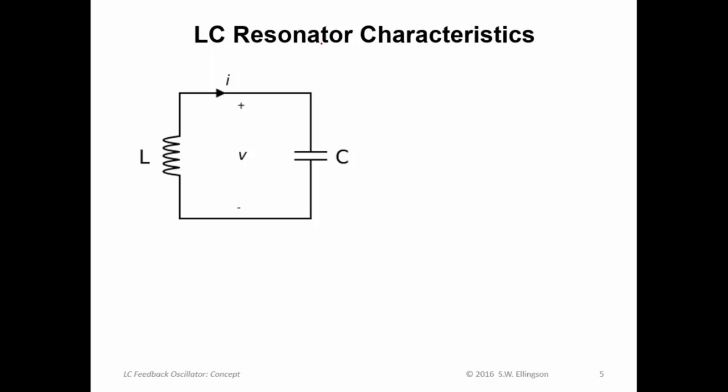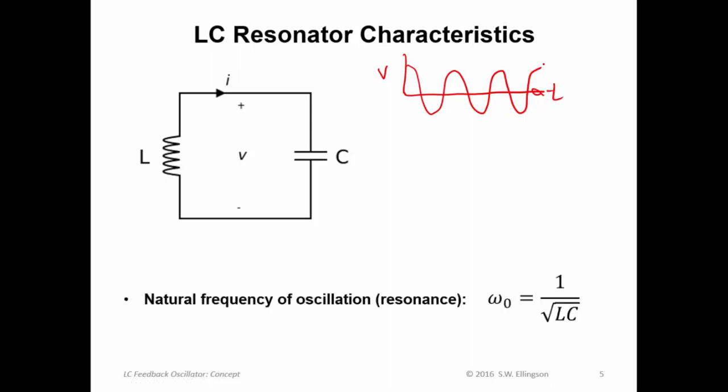So let's think about how we can use this. If we have this simple LC resonator and we measure the voltage and we get this thing started what we see over time of course is something that looks like this. Here's v here's t. And we see that simply vary back and forth as a nice sinusoid indefinitely. And that by definition is an oscillator. The frequency of that oscillation you should know from a previous course is simply one over the square root of the inductance times the capacitance. And of course that's in radians per second. So we refer to that as the natural frequency of oscillation.